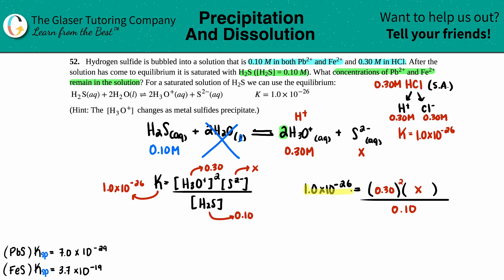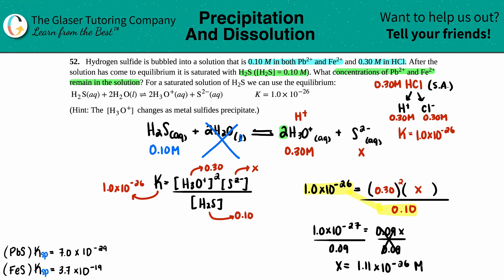Cross-multiplying: 1.0×10⁻²⁶ × 0.10 = 1.0×10⁻²⁷ = 0.09 × x. Dividing both sides by 0.09 gives x = 1.0×10⁻²⁷ / 0.09 = 1.11×10⁻²⁶ M. So the sulfide ion concentration is [S²⁻] = 1.11×10⁻²⁶ M.